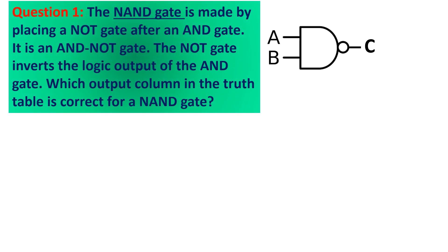Question number 1: The NAND gate shown in this diagram is made by placing a NOT gate after an AND gate. The NOT gate inverts the logic output of the AND gate. Look at the symbol for a NAND gate — there are two inputs, terminals A and B, and the output is labeled terminal C. Notice that there is a circle to the right attached to the big letter D shape, which is the distinguishing mark of a NAND gate symbol as compared to an AND gate.